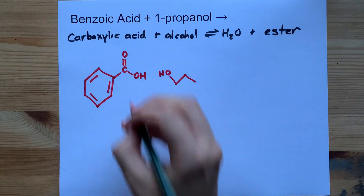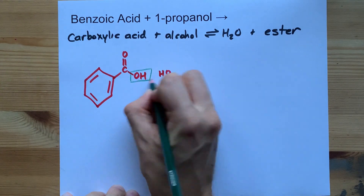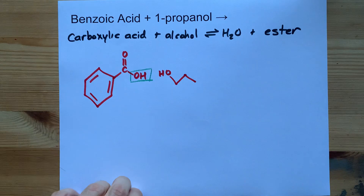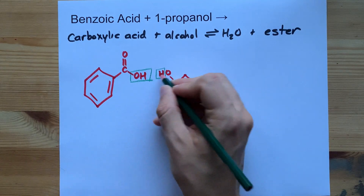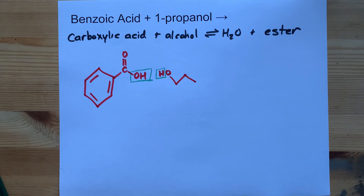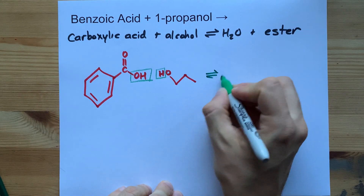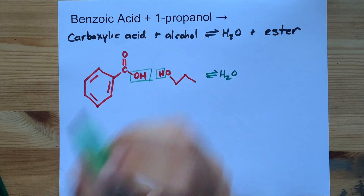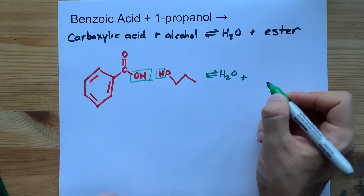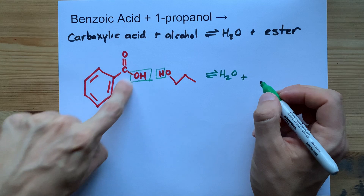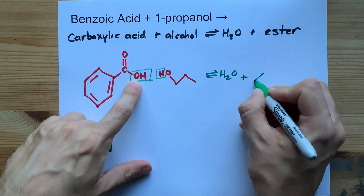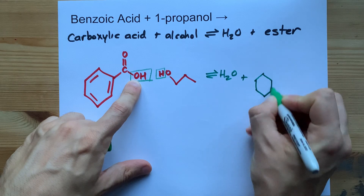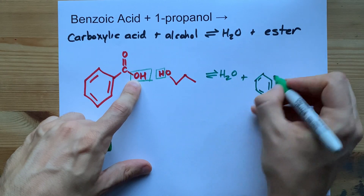Esterifications work by chopping the OH off of the acid and the H off of the alcohol group. Those two combine to give you water — H2O. And the ester product is this same molecule up to and not including that OH group, because it disappeared and is involved with the water instead.